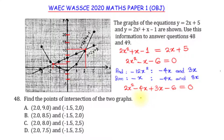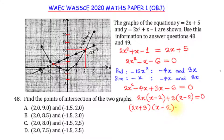Factoring by grouping: from the first two terms, 2x is common, giving 2x(x - 2); from the last two terms, 3 is common, giving 3(x - 2). So the equation becomes (2x + 3)(x - 2) = 0.